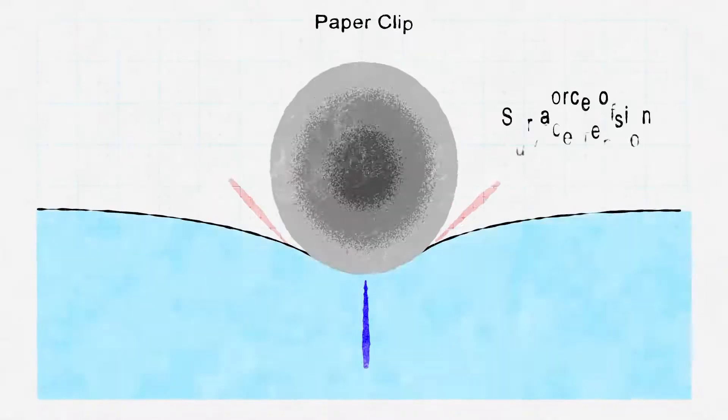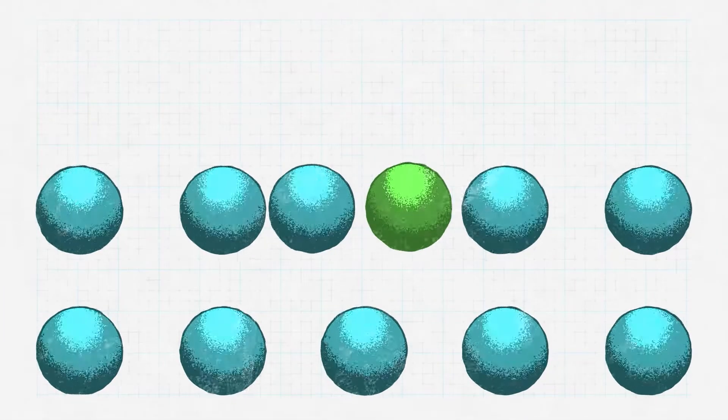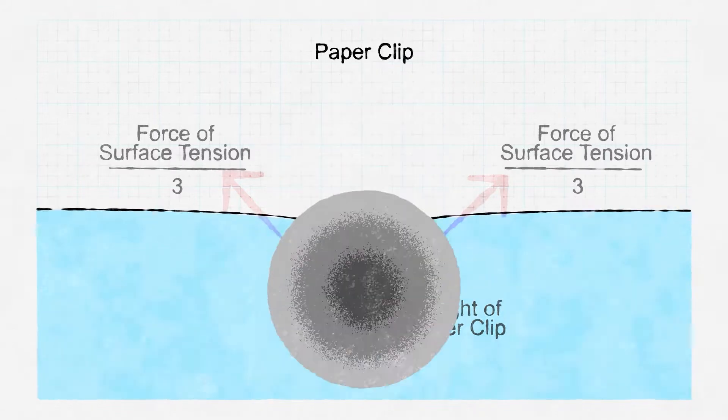Soap molecules are made of long chains of hydrocarbons. At one end is a molecule which absolutely loves being in water and at the other end, one that absolutely despises it — it is hydrophobic. So when the soap is dropped into the water, these two molecules separate and the hydrophobic one tries its absolute hardest to worm its way up to the surface. As they find their way to the surface, they squeeze in between the molecules of water on the top, decreasing the surface tension of the water by roughly a third, unbalancing the cohesion so the paper clip sinks.